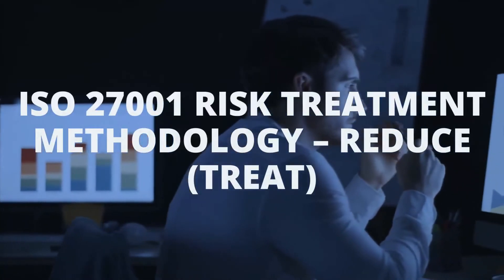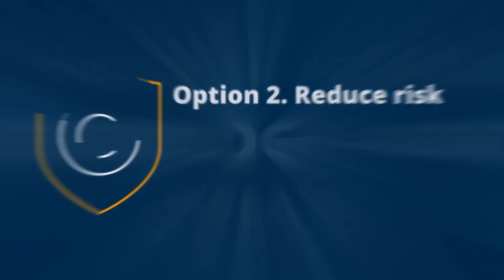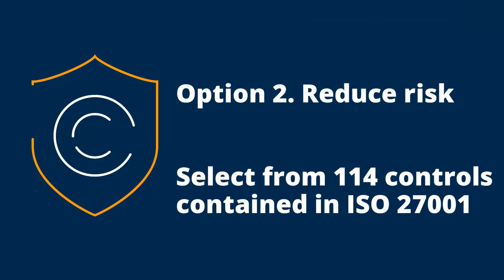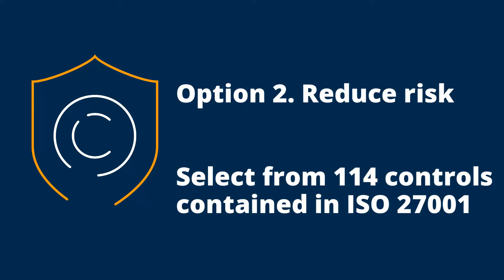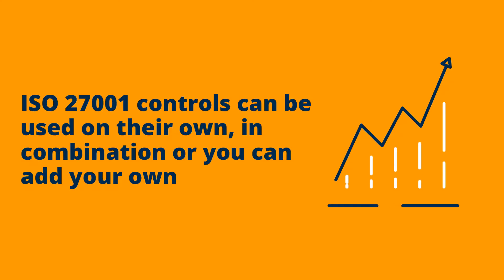The second treatment option is to reduce or treat the risk. This is done through the implementation of controls. ISO 27001 provides you with a list of 114 best practice controls that can be used to mitigate the risks that you have identified. These can be used in combination to increase their effectiveness, and of course you can also add controls of your own that do not appear in ISO 27001.